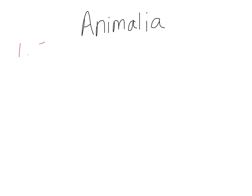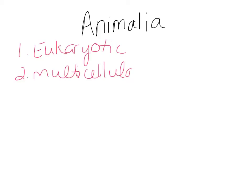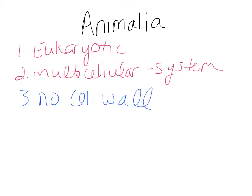The last kingdom is Animalia, or animals. Obviously, they're eukaryotic — in the Eukarya domain, they have membrane-bound organelles and eukaryotic cells. Animals are multicellular and can be organized all the way up to the systems level. Think about your own body — humans are an example of animals. There is no human kingdom; humans are in the animal kingdom. We have different systems: immune system, nervous system, cardiovascular system. Animals have no cell wall.